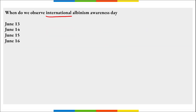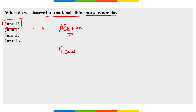When do we observe International Albinism Awareness Day? This day is observed on 13th of June. It is to create awareness about albinism — a condition where a person's skin appears completely white due to the loss of pigment in their body. This day highlights the importance of the human rights of people with albinism worldwide. The theme for 2023 is 'Inclusion Is Strength.'